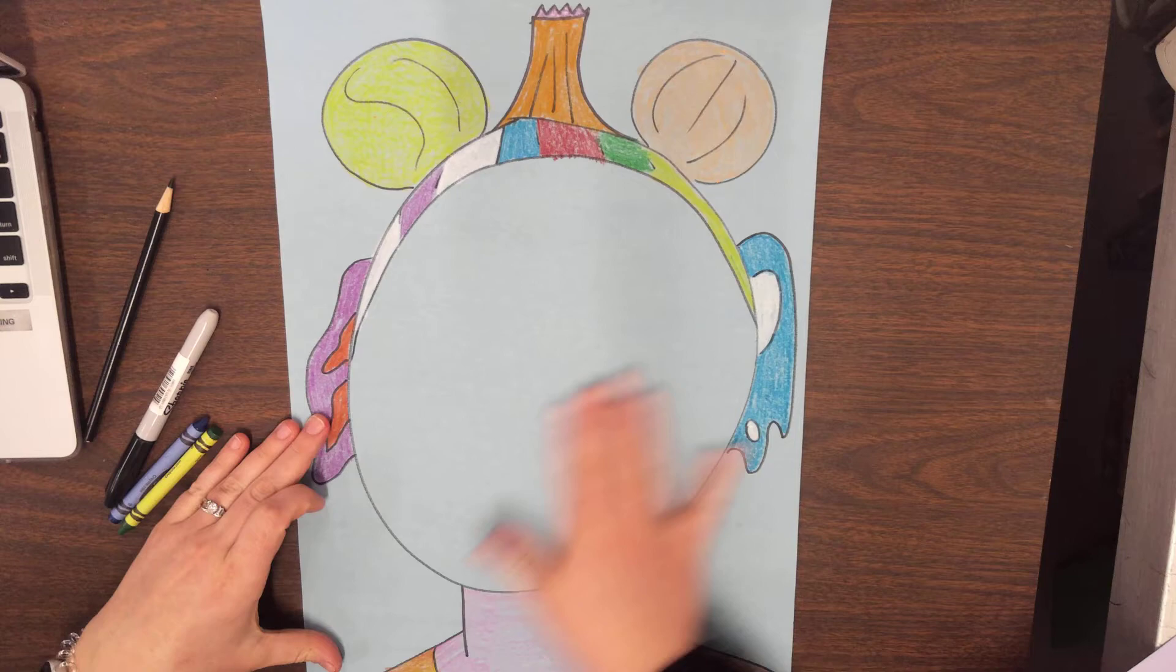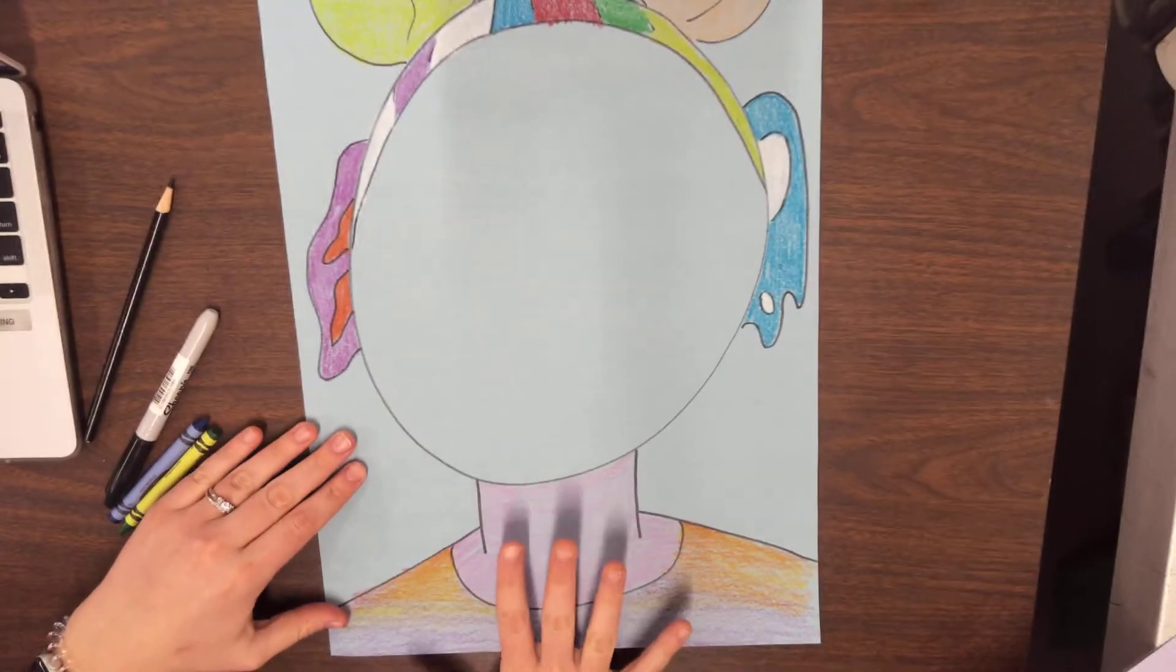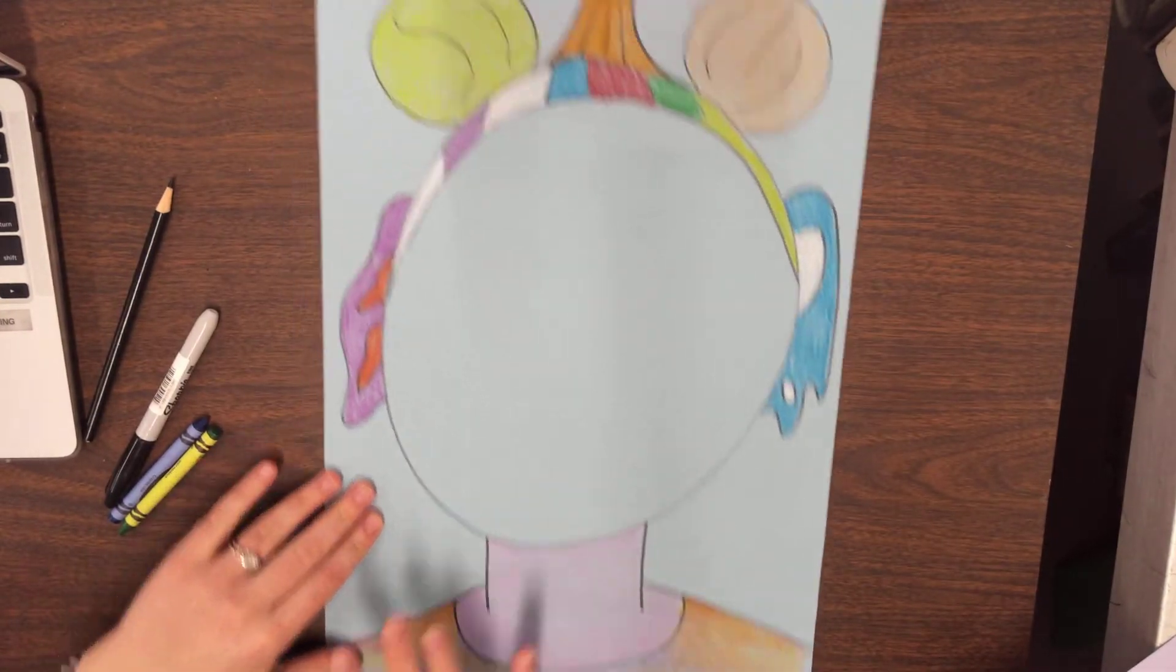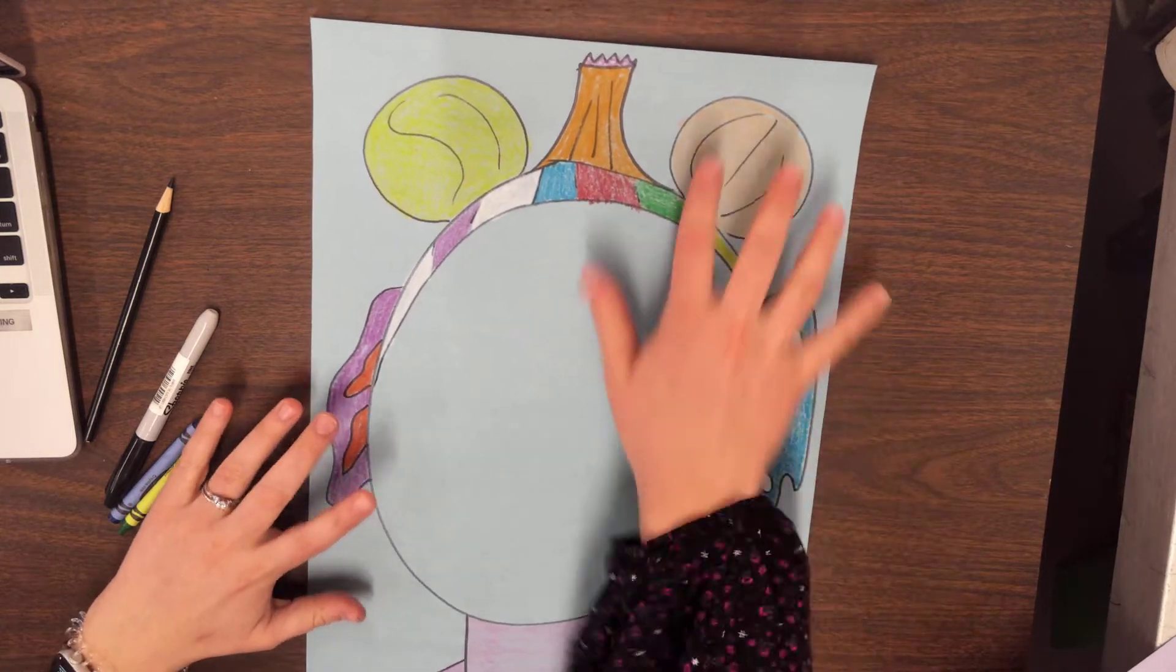So you had a big face with no eyes, no mouth, but you did color in and draw your neck, your shirt, crazy ears if you wanted to, and your hair.